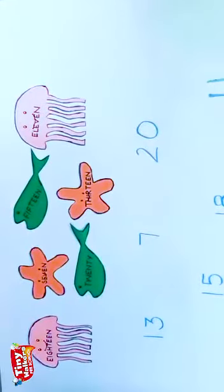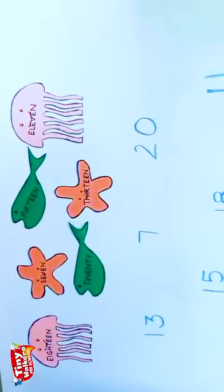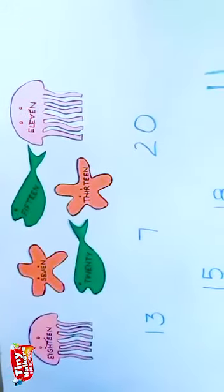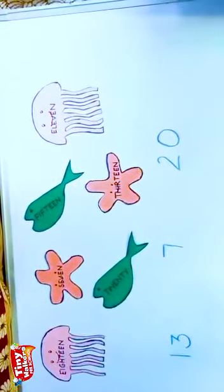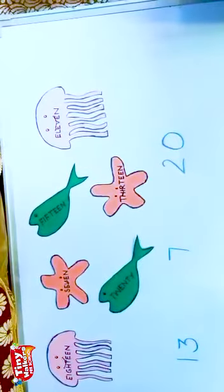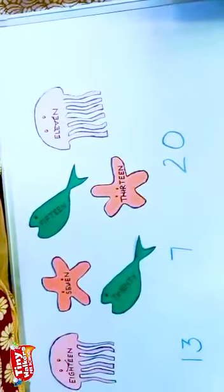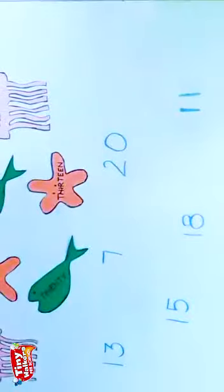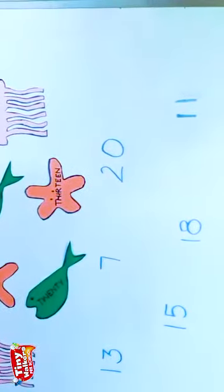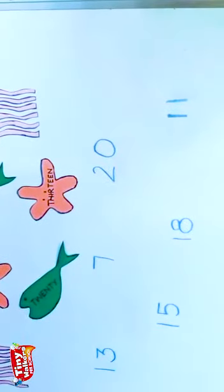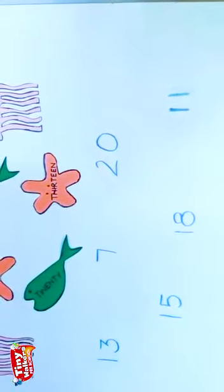So today, I have used blue pen to write the numbers. Toh let's do the activity. Children, here you can see some ocean animals. Some words are written on them. You have to read those words and then place them near the correct number. Aap ne wahaan se spellings ko read karna hai aur sahi number ke paas card ko rakhna hai. Thak hai? So let me take the first card.